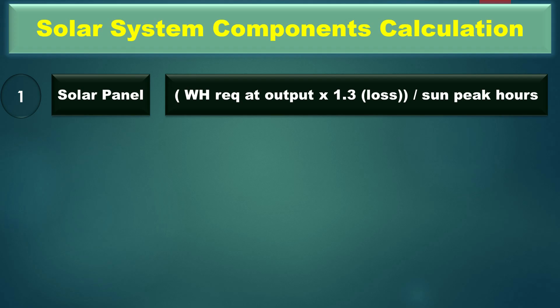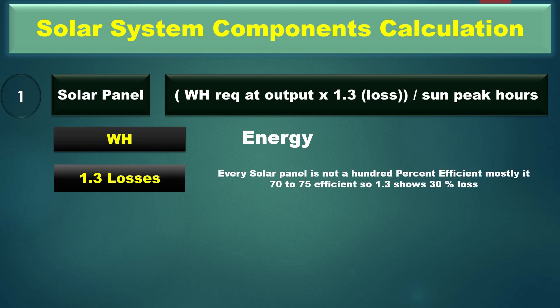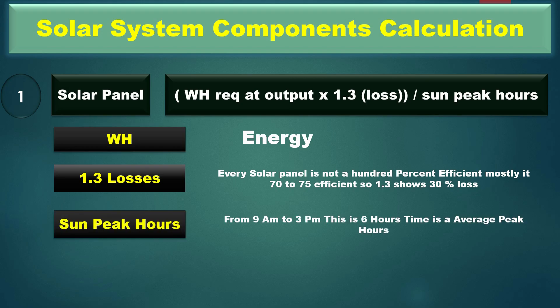First, we calculate the solar panel. The formula for solar panel is: watt-hours required at output multiplied by 1.3, divided by sun peak hours. Watt-hours required at output means energy, and we know the energy value is 9186. The 1.3 factor accounts for losses — solar panels are not 100% efficient; mostly they are 70 to 75% efficient, so 1.3 represents 30% losses.